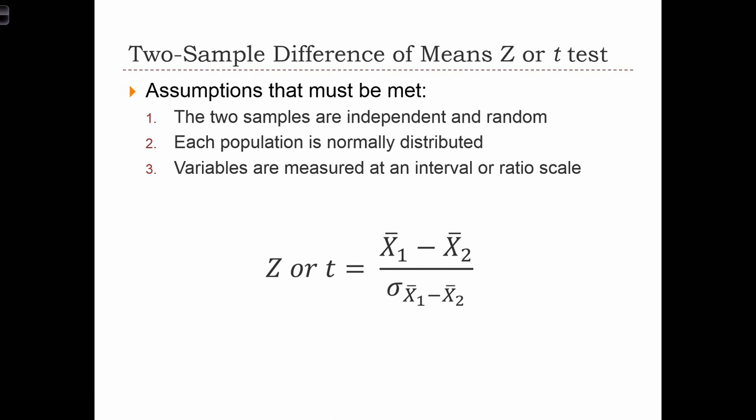Now, the z or t-test is quite straightforward. On the numerator, we just have the difference between the two sample means. And on the denominator, we have something called the standard error of the difference of means.